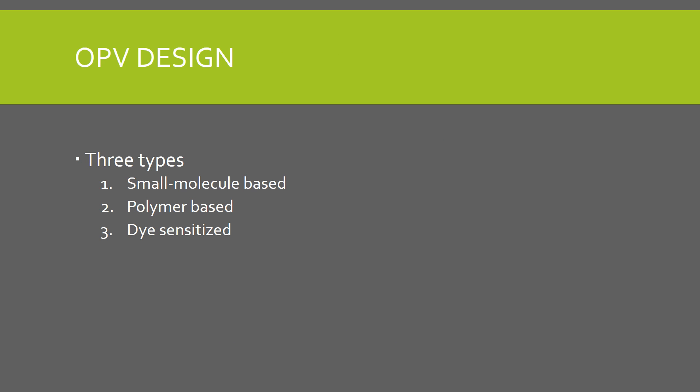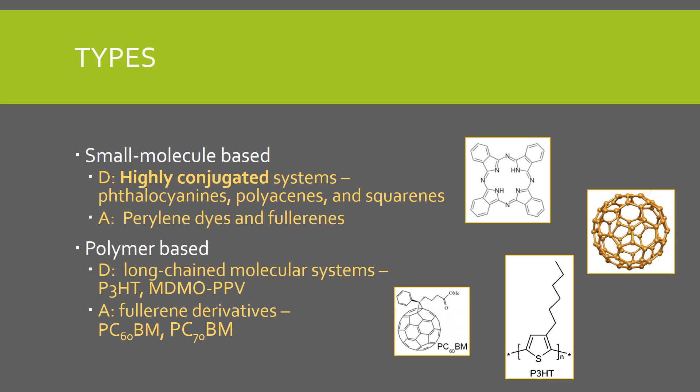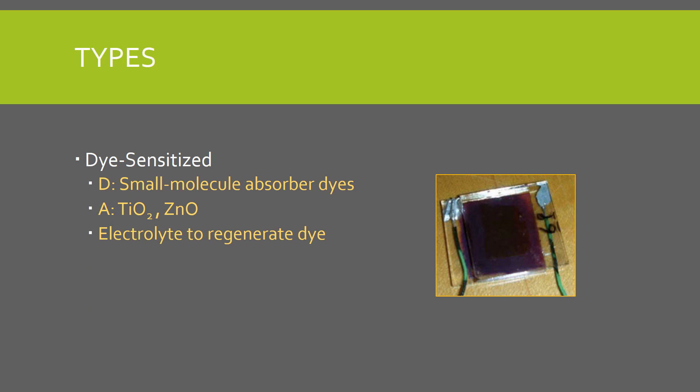There are three types of organic cells. In small molecule-based cells, the donating material is a highly conjugated system — that is, a molecule with alternating single and multiple bonds, like this one over here. The acceptor can be a dye or a fullerene, like this. Polymer-based cells have long-chain molecules as the donor, and derivatives of fullerene as the acceptor. Dye-sensitized cells use dyes as the donor and metal oxides as the accepting material, and an electrolyte to replenish electrons.